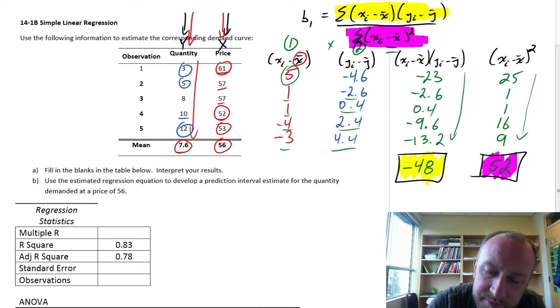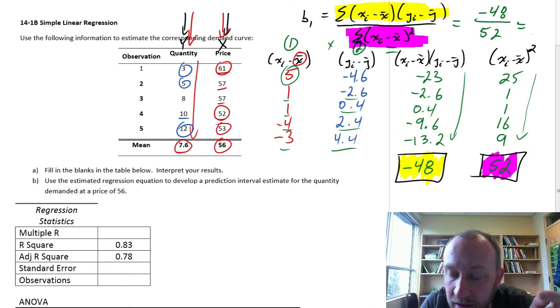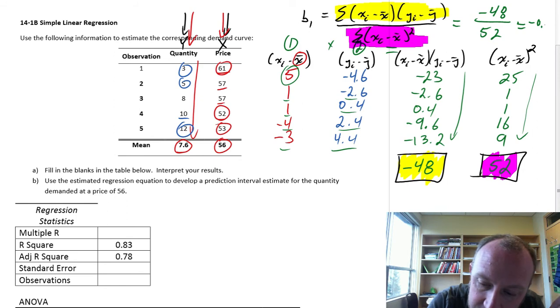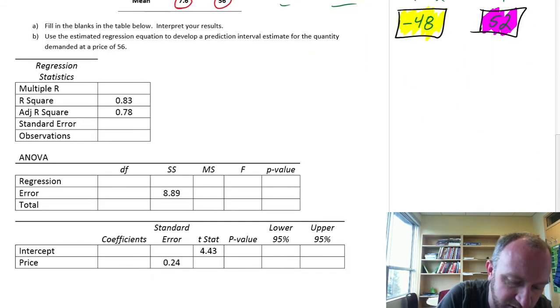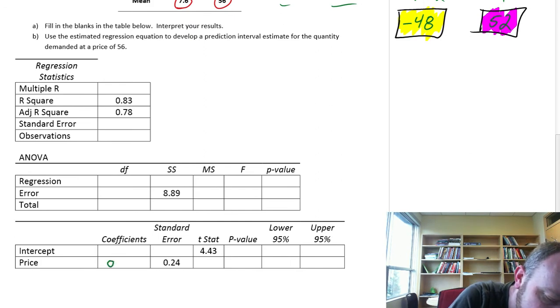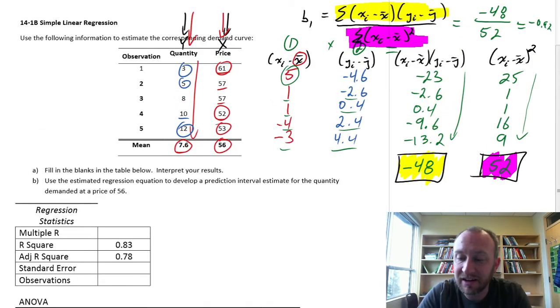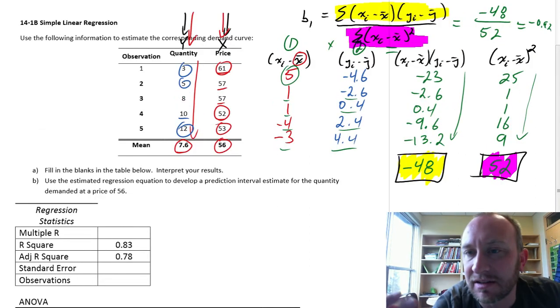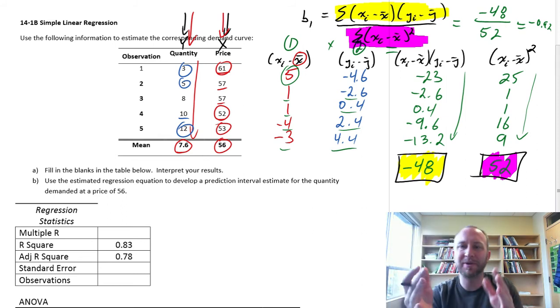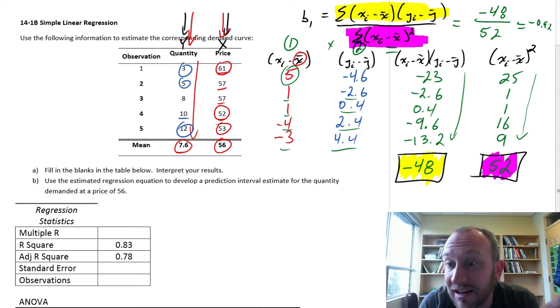Let me give myself some space. I have minus 48 divided by 52, and this gives me our coefficient: minus 0.92. Here's our coefficient, minus 0.92. Once we get all the pieces of that puzzle, the rest of the calculation is relatively straightforward, but as you can see, it's a little bit tedious.